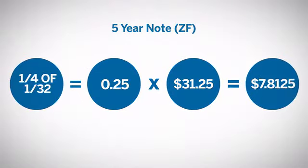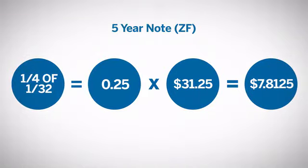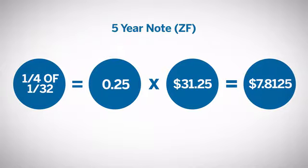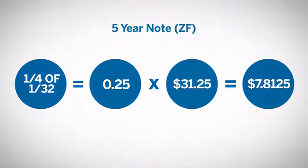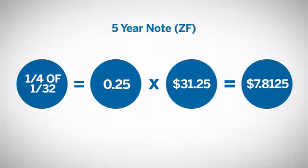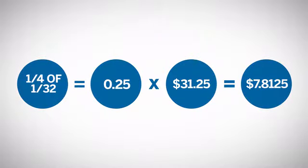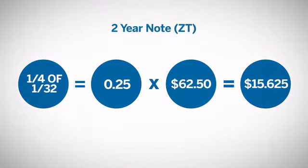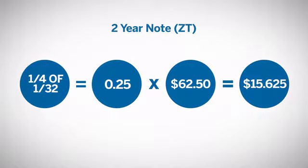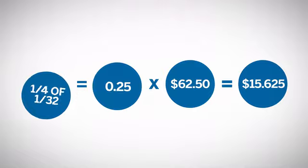The minimum tick size for the 5-year note futures is a quarter of 1/32. Since the face value of the 5-year note future is $100,000, a 1/32 is worth $31.25. Therefore, a quarter of a 1/32 is equal to 0.25 times $31.25, equaling $7.8125, rounded to the nearest cent per contract. Two-year note futures have the same minimum tick size of a quarter of 1/32, but since the face value of the 2-year note contract is $200,000, the minimum tick is worth $15.625 per contract.